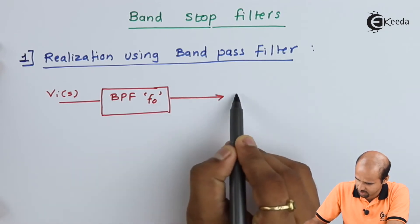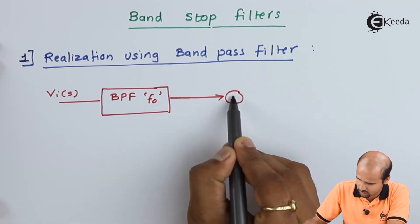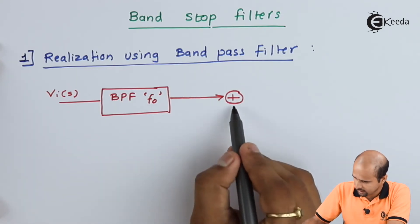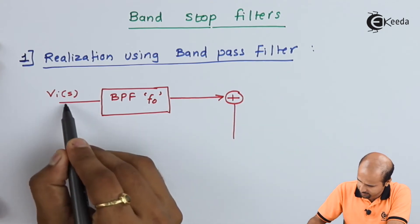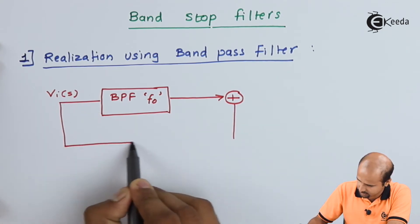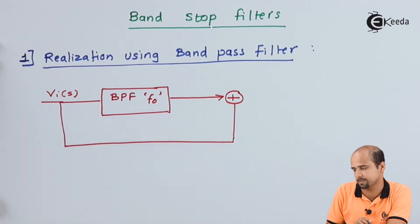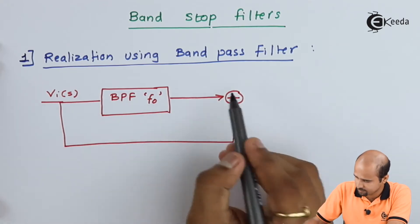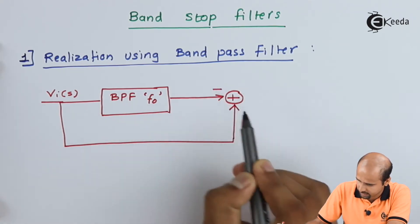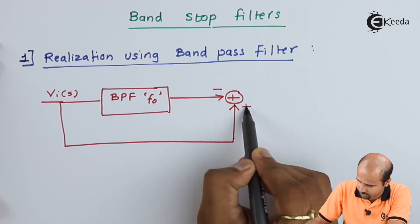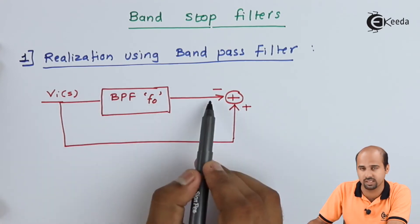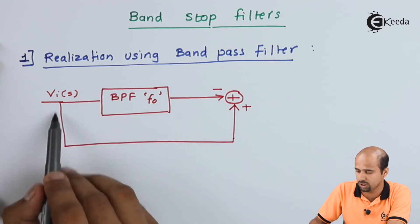The output of the band pass filter is fed to a summing circuit, and the input signal itself is also directly connected to the summing circuit. What this indicates is that we are subtracting the band pass filter output signal from the input signal.